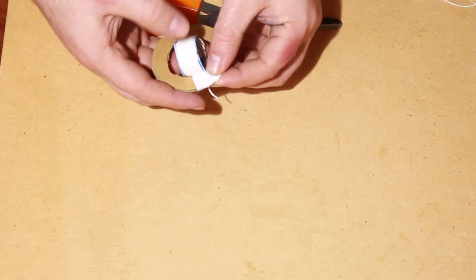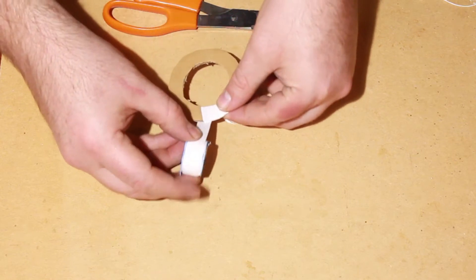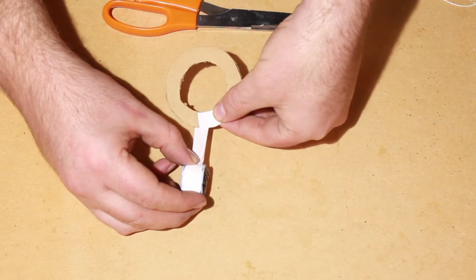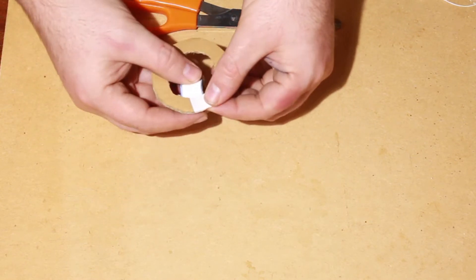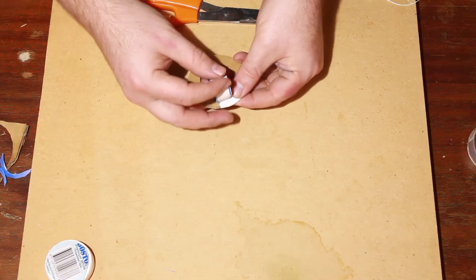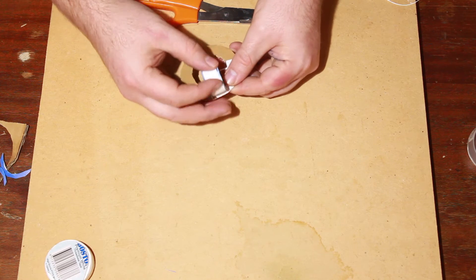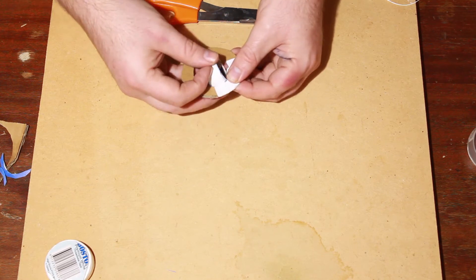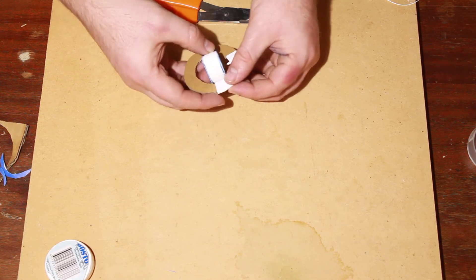You want to be overlapping at least half of the width of the tape like that, and you can just work your way all the way around. PTFE tape is super cheap, so I'm not worried about using a lot of it. I'm actually going to go all the way around this twice. I'm going to do a double layer.